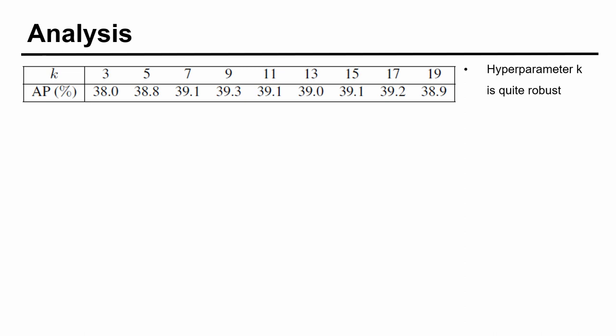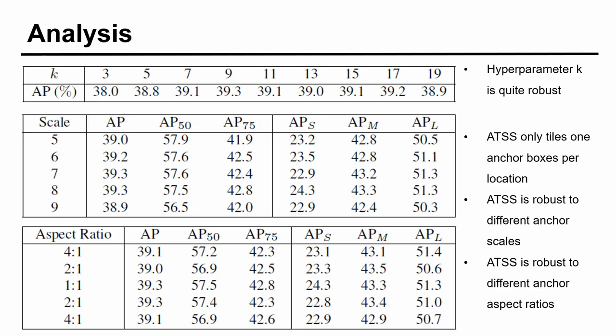There is only one hyperparameter in our method, which is quite robust in a large range. Besides, our method uses one anchor-based to define positives, so it is robust to different anchor settings.